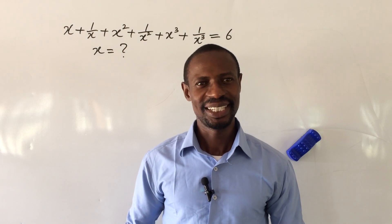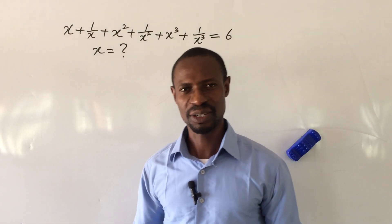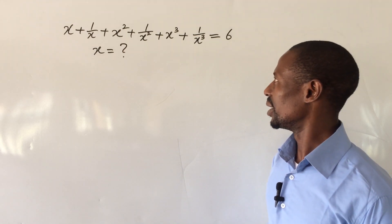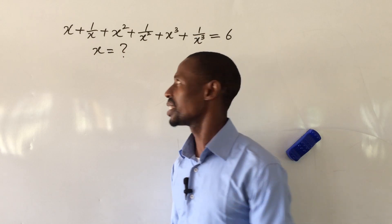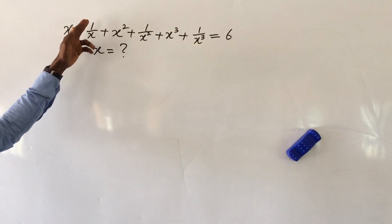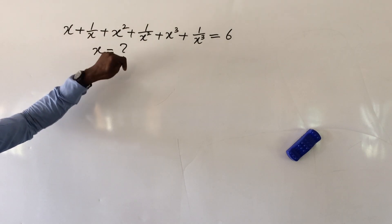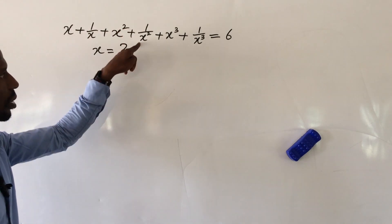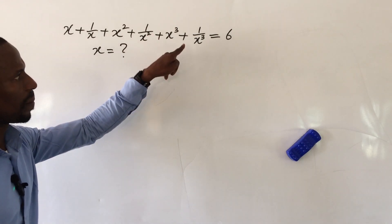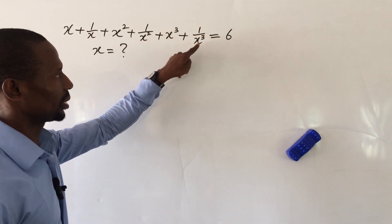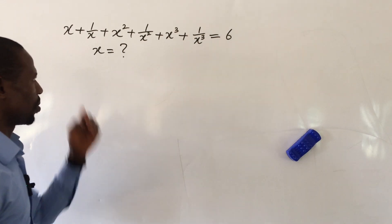Welcome everyone to my channel. Today we have a challenge on algebraic expression having the highest power of the variable to be 3. The question says: x + 1/x + x² + 1/x² + x³ + 1/x³ = 6. What then will be the value of x?